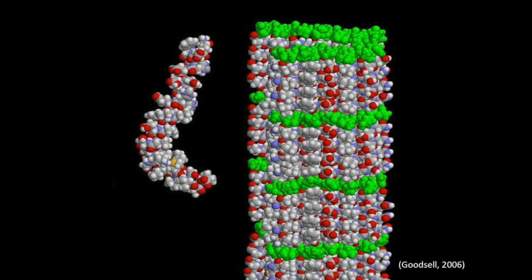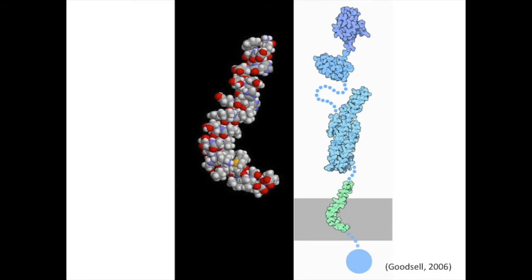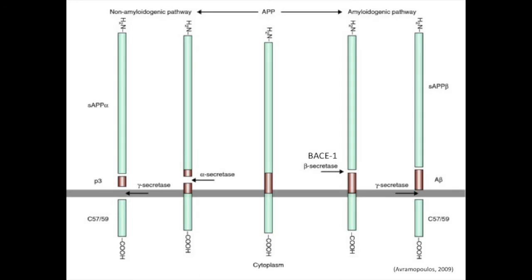In our video, we'll talk about the synthesis of amyloid beta-42 from the amyloid precursor protein, or APP. To the left is amyloid beta-42, which is derived from APP on the right. APP undergoes a series of enzymatic cleavage by a class of proteins called secretases, such as gamma secretase and BACE-1, to form amyloid beta-42.